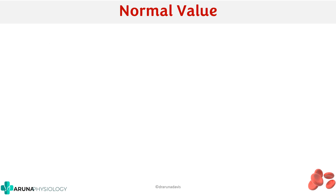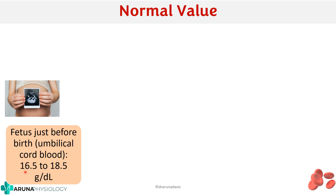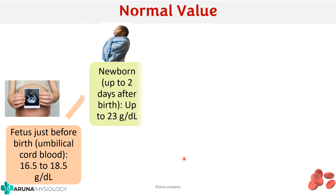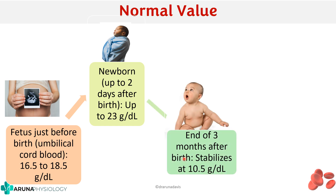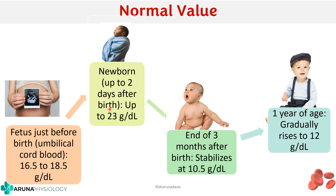Not only based on gender, for different age groups the hemoglobin value may also be different. During the fetal period, the hemoglobin level is around 16.5 to 18.5 gram per deciliter, which is higher than the adult group. In newborns it is around 23 gram per deciliter because they are in a state of hypoxia, especially during initial days, which stimulates erythropoiesis. This returns to around 10.5 gram per deciliter during the first 3 months, then gradually increases to 12 gram per deciliter at around 1 year of age.